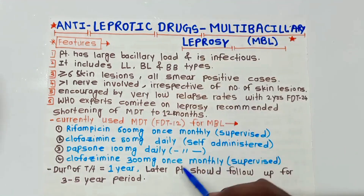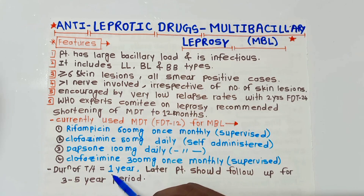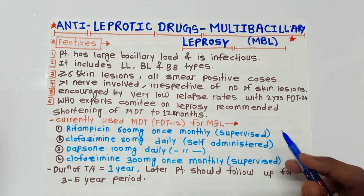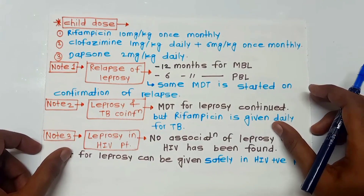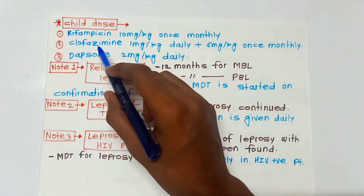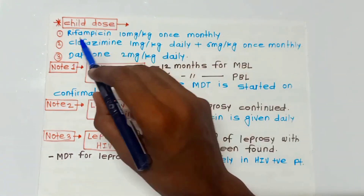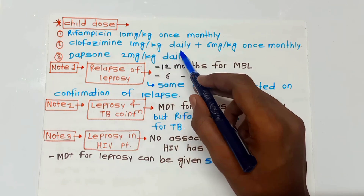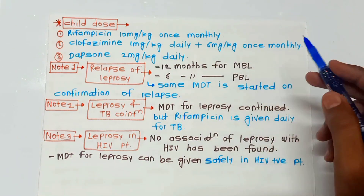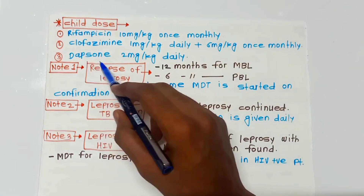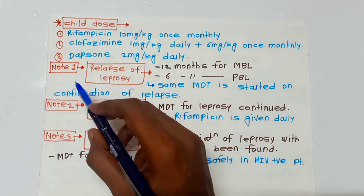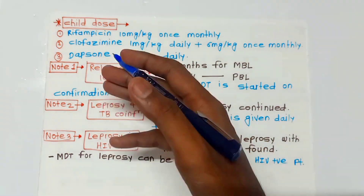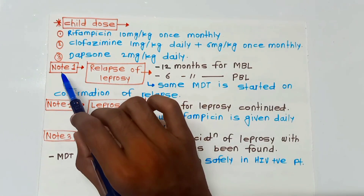The duration of treatment is one year, after which the patient should follow up for three to five years. In children, the doses are slightly different: Rifampicin 10 mg/kg once monthly; Clofazimine 1 mg/kg daily plus 6 mg/kg once monthly; and Dapsone 2 mg/kg daily.